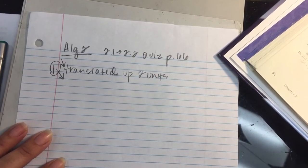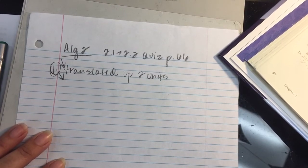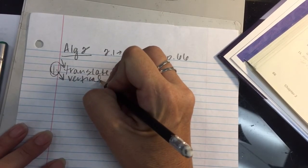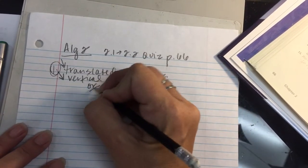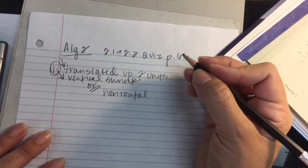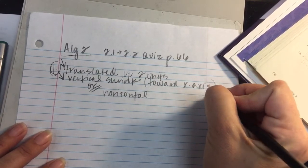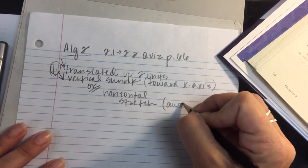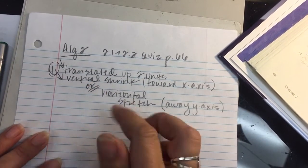The other thing that happened was the parent function got fatter. Depending on how you look at this, we could call that a vertical shrink, because a vertical shrink goes towards the x-axis. Or, if you looked at it in terms of horizontal, it would be a horizontal stretch, because that would be going away from, so this is towards x-axis, and a horizontal stretch is actually describing the same thing. It's going away from the y-axis. We're not asked to write the equation. We're just asked to make a description of the transformation. Either of those would be acceptable.